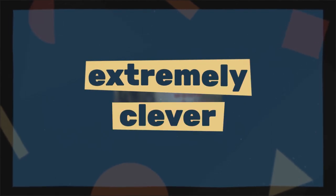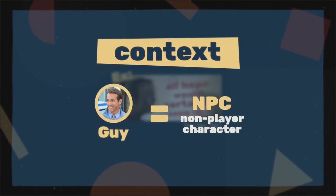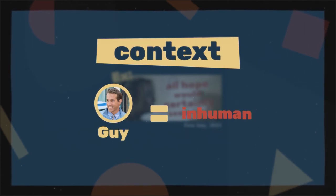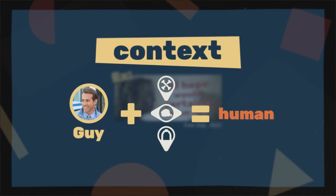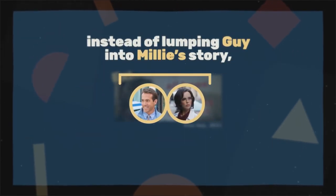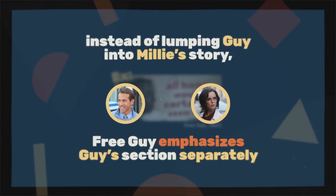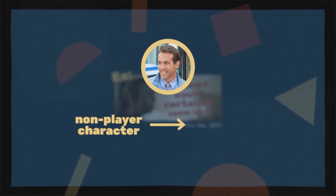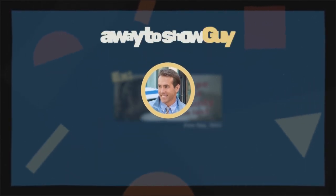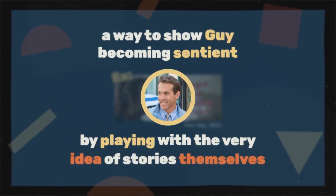But instead, the movie did something extremely clever. Remember the context: Guy is a non-player character. He is, by definition, inhuman. So what better way to humanize him than to give him his own section — to show him fighting when all signs point to giving up? Instead of lumping Guy into Millie's story, Free Guy emphasizes Guy's section separately, and thus emphasizes what the story is truly about: a non-player character becoming, well, a player character. A way to show Guy becoming sentient by playing with the very idea of stories themselves.